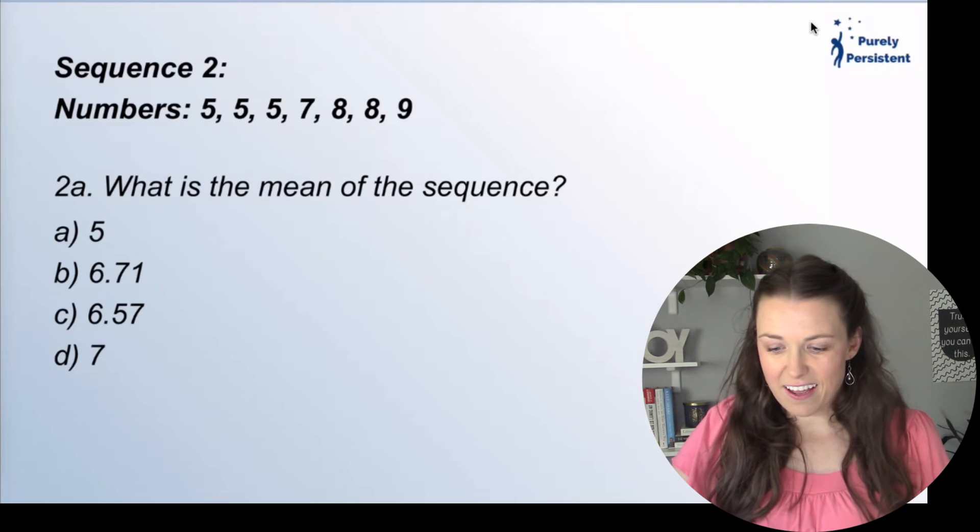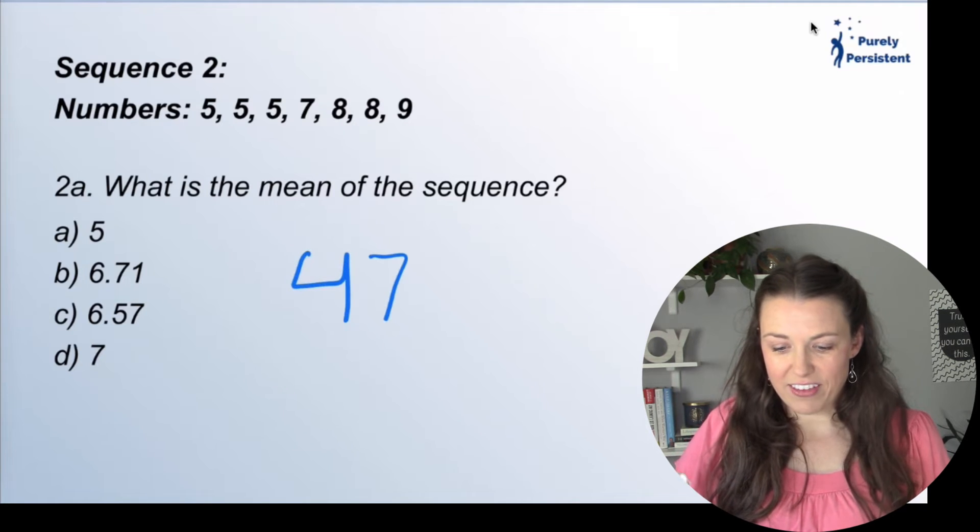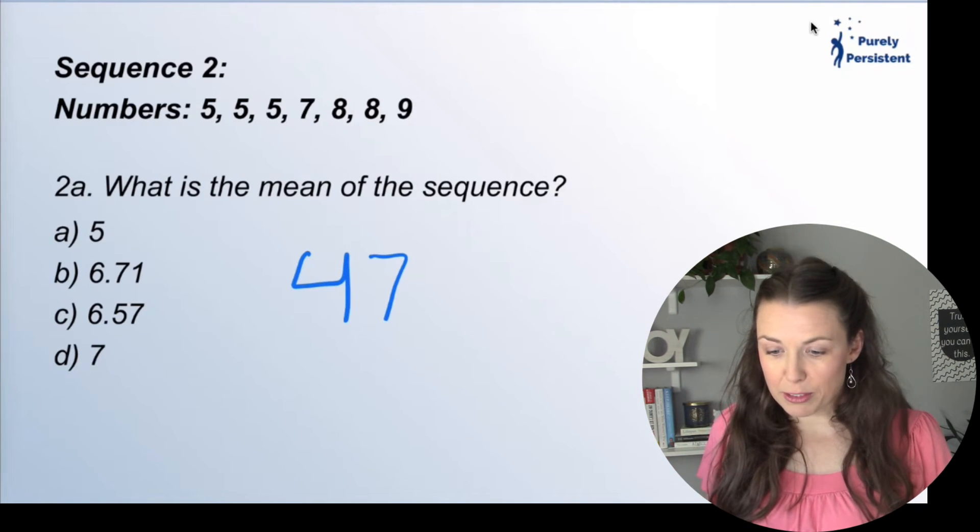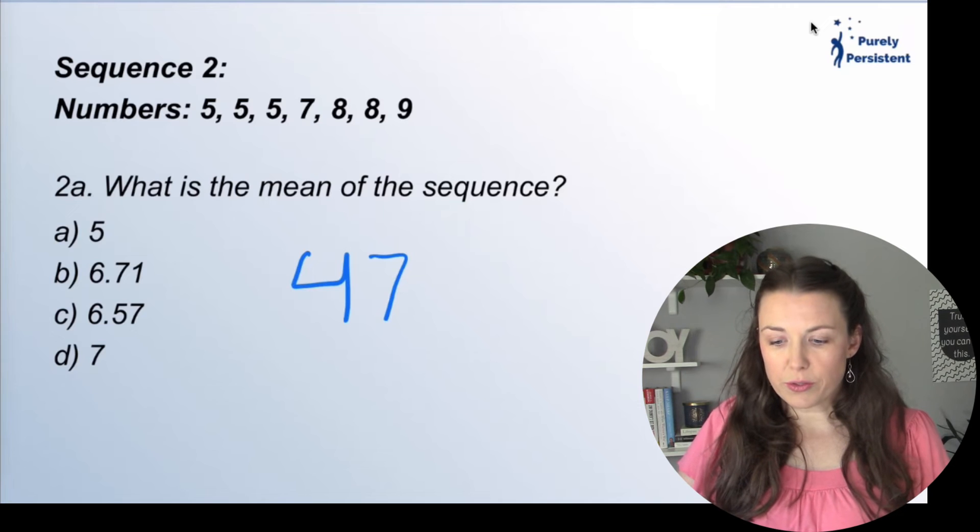And what do I get? 47. Now, how many numbers are there total? One, two, three, four, five, six, seven. Seven numbers.